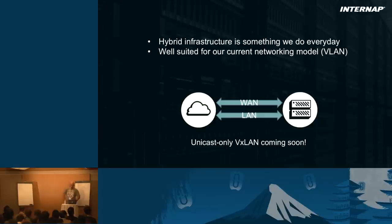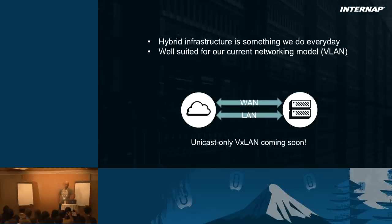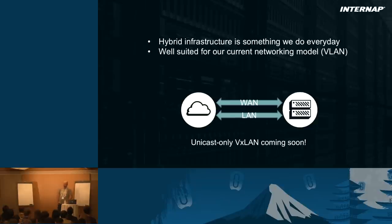About the hybrid infrastructure: a mix between physical and virtual is something we already do for a lot of our clients. It works well with our current networking model, which is VLAN. It's well suited for the type of customers we have — big customers, big deployments, and a rather small number of customers. This allows big enterprise customers to extend into the cloud instead of moving all at once.